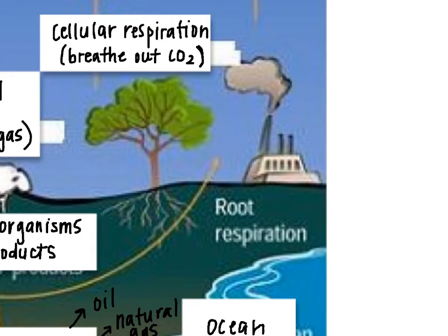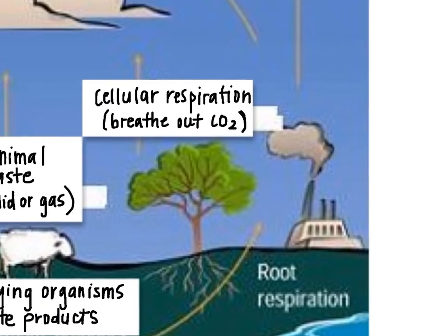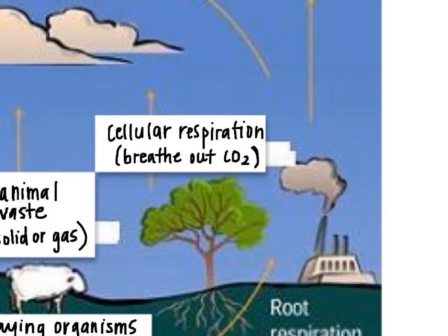We've got either the fossil fuels being used in a factory, or the process of cellular respiration, that send carbon back up into the air. In cellular respiration, plants or animals can perform this process — it's the process of taking in oxygen and using glucose to produce carbon dioxide and water. That carbon dioxide gets released back up into the air, similar to when we breathe out.